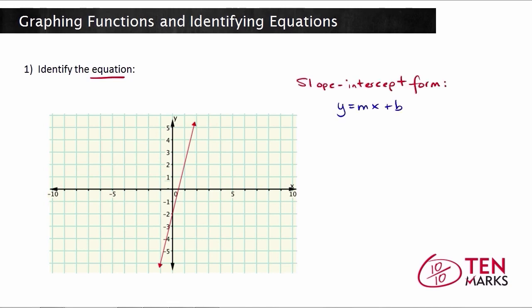When you have an equation written in slope-intercept form, which is y equals mx plus b, you can clearly identify the slope of the line and the y-intercept of the line. In the equation y equals mx plus b, m represents the slope of the line, while b represents the y-intercept. Now, recall that the y-intercept is the point at which the line crosses the y-axis, which is this vertical axis right here.